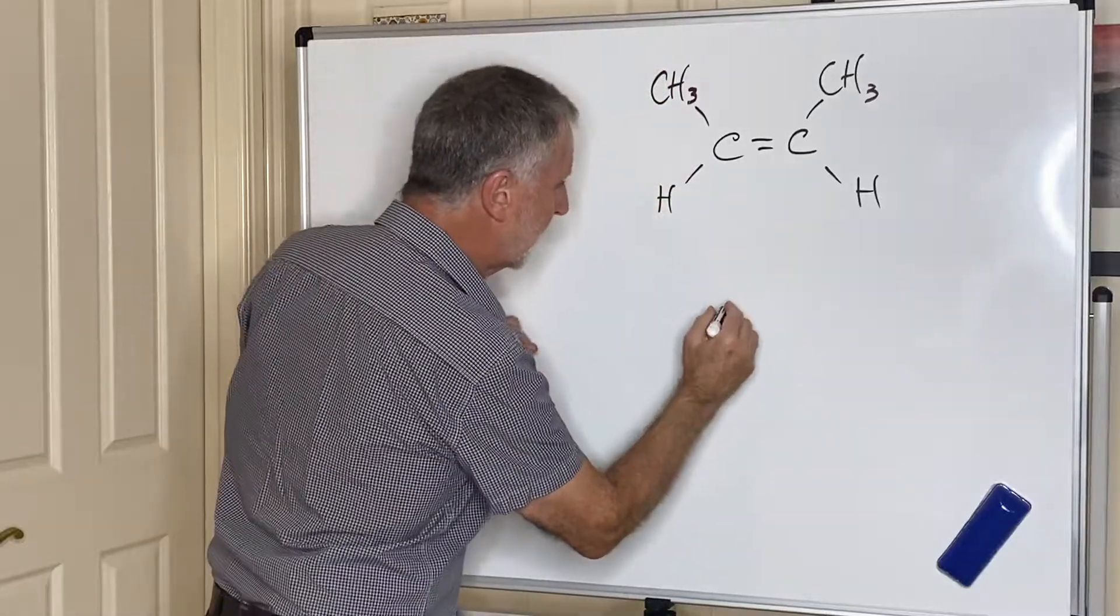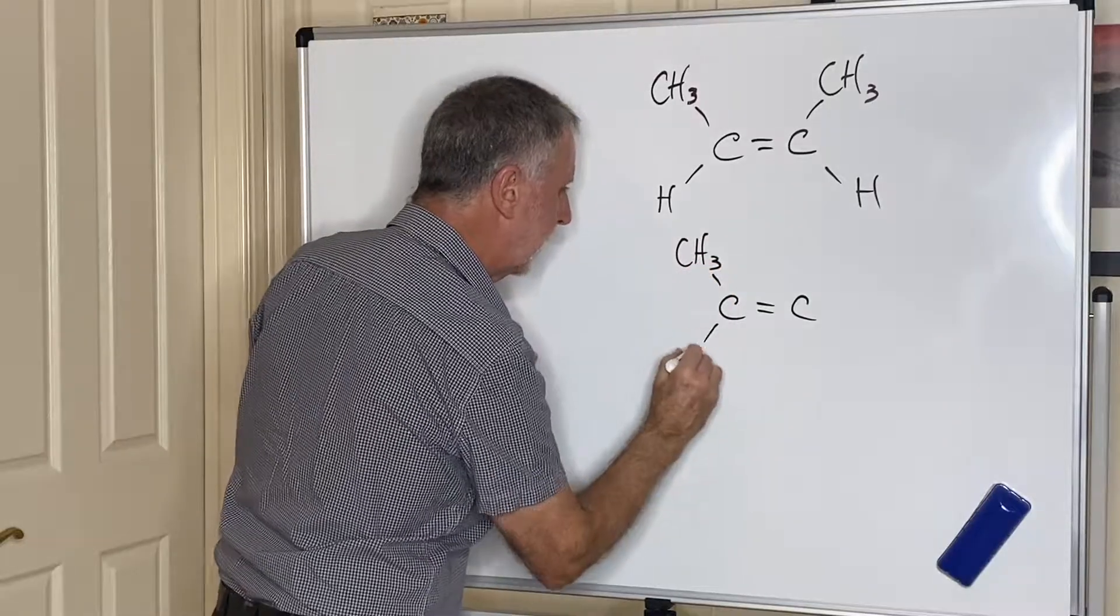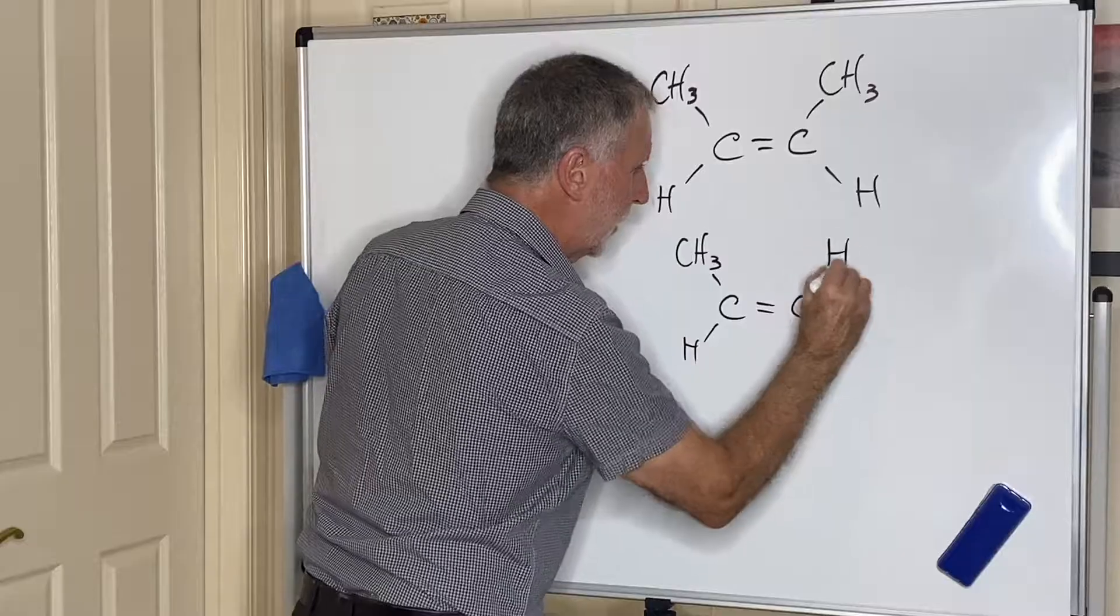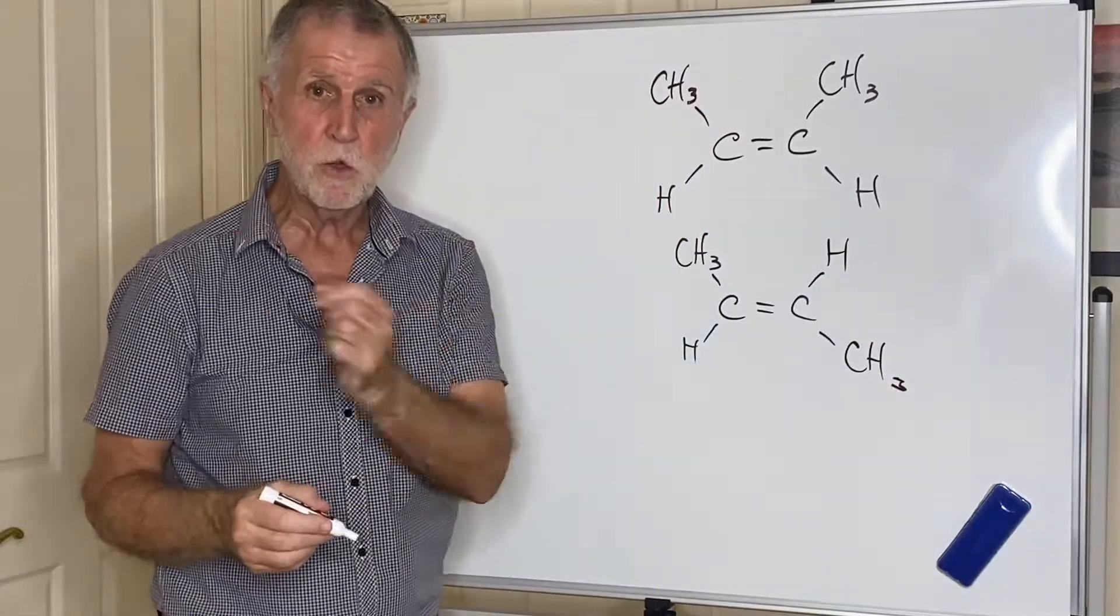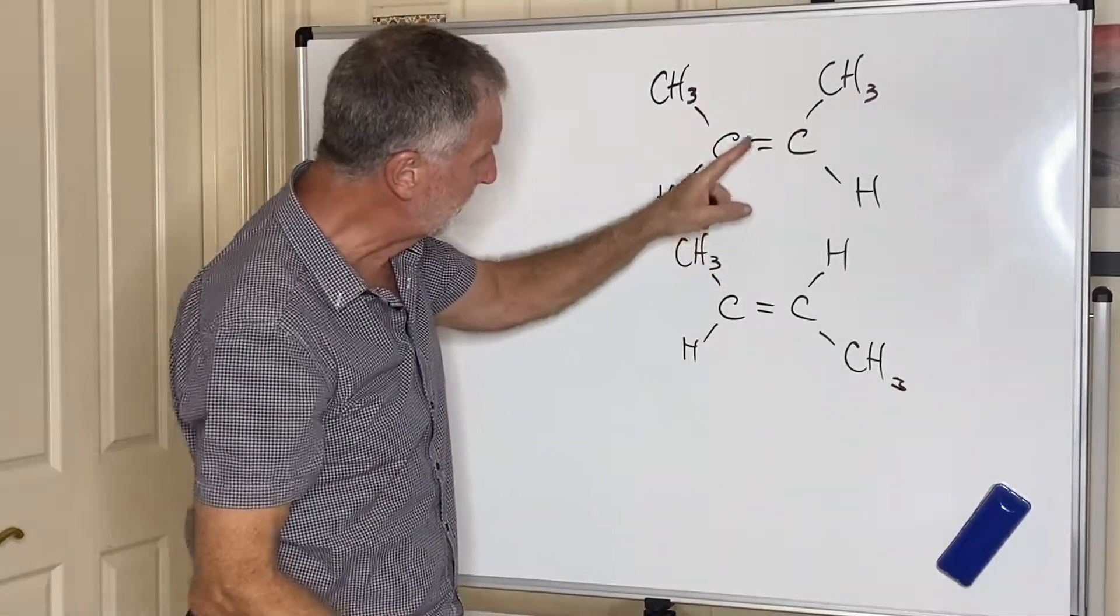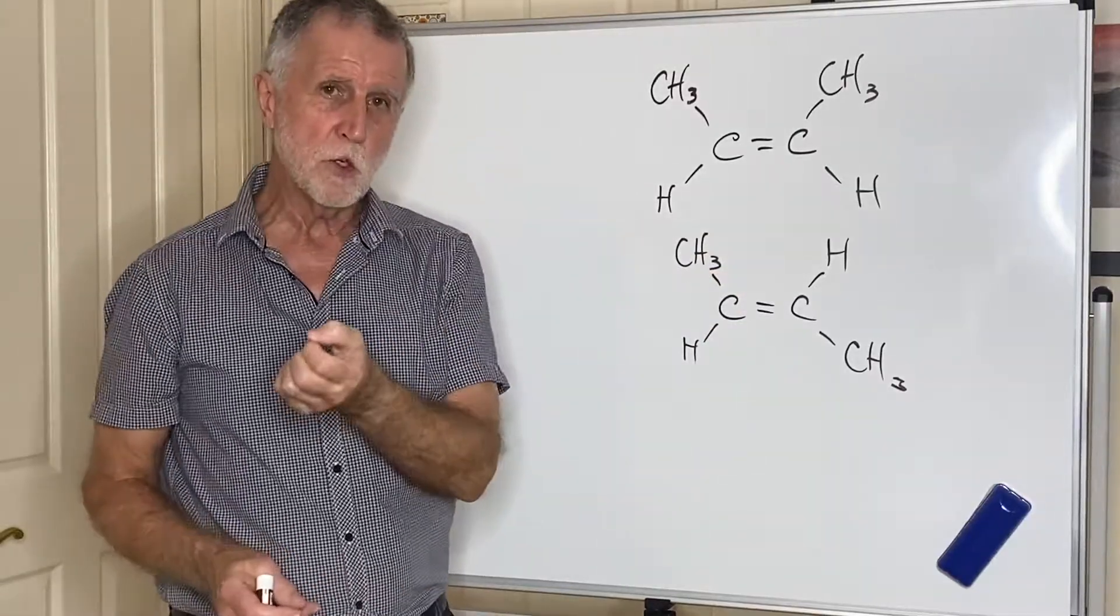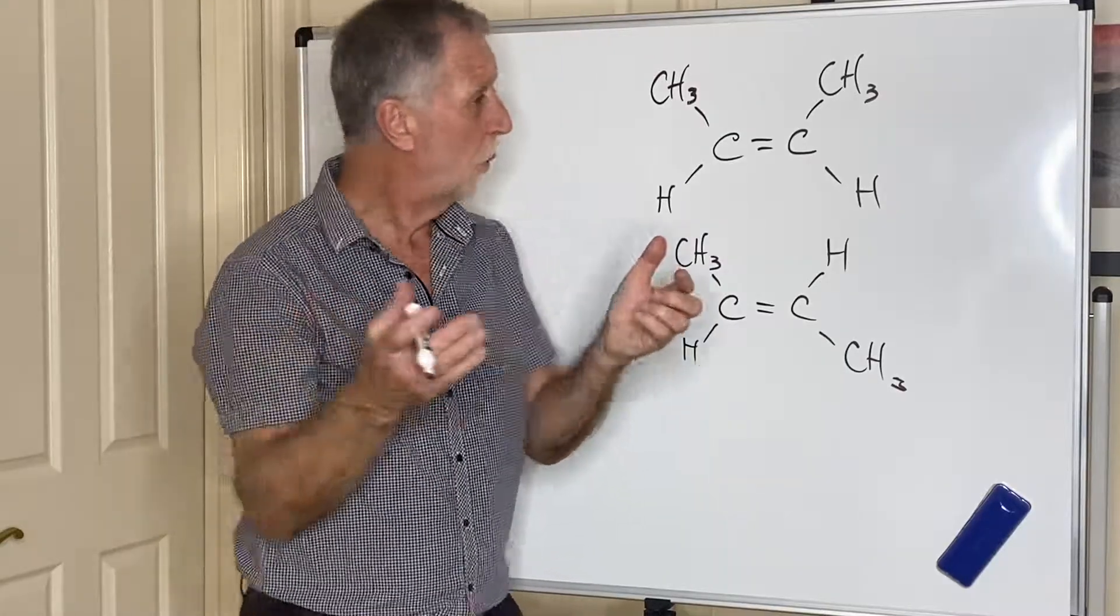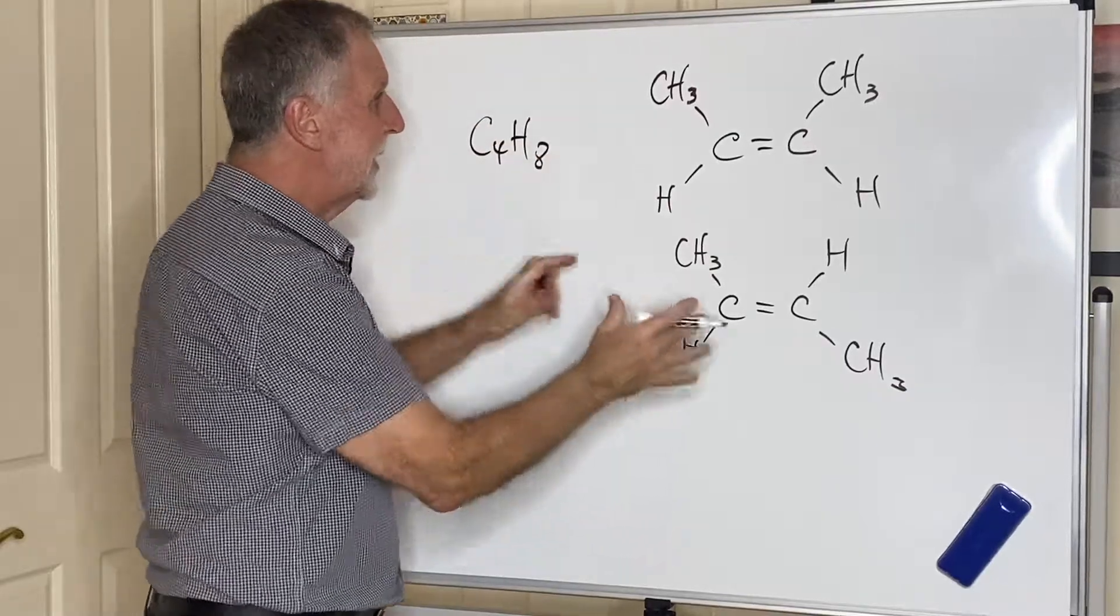So that means if I do this and put a CH3 and an H on the same as this one and then change these two around, I've actually got two different structures. That double bond prevents me twisting and turning that into that.